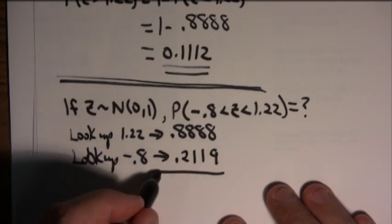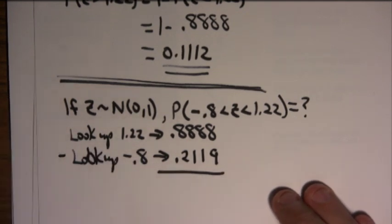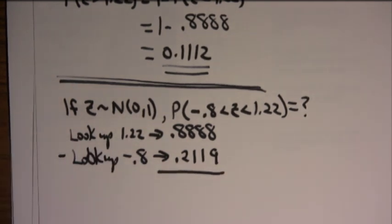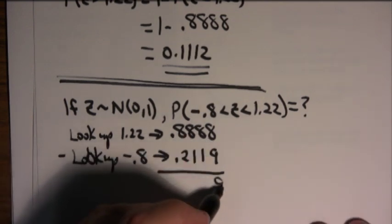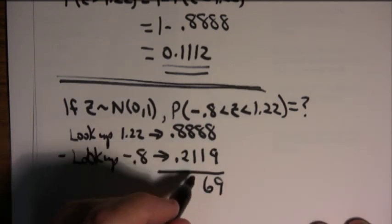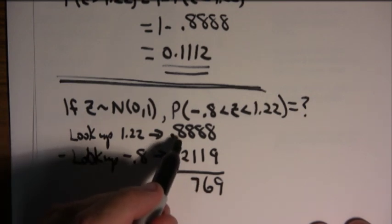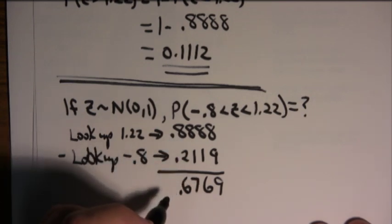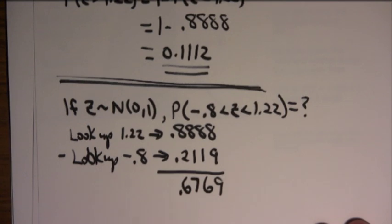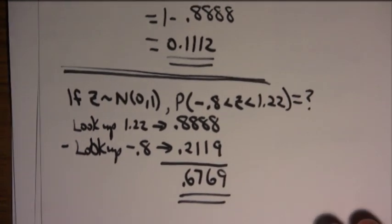And then, because I'm trying to find the difference, I subtract. 18 minus 9 is 9, 7 minus 1 is 6, 8 minus 1 is 7, and 8 minus 2 is 6. And so, the answer is 0.6769.